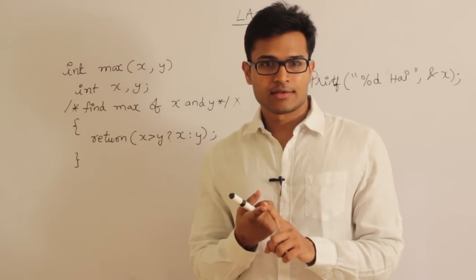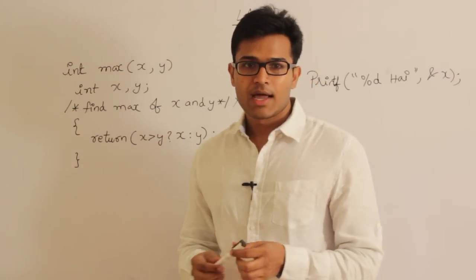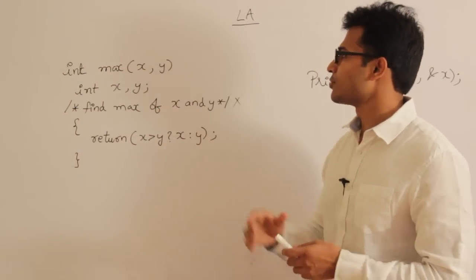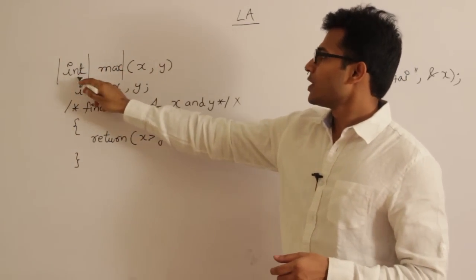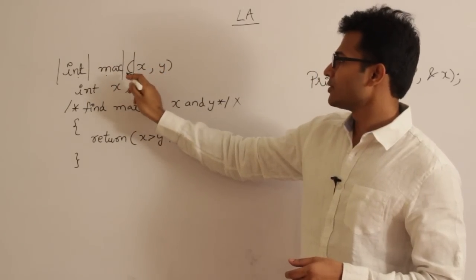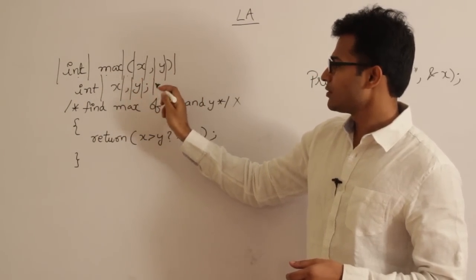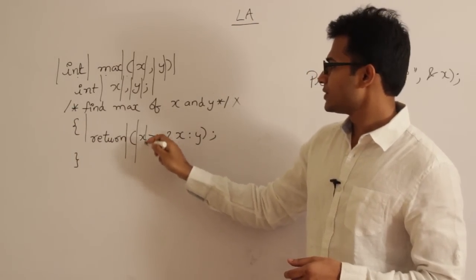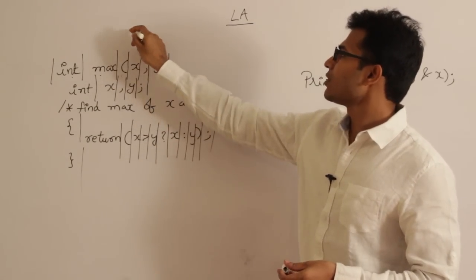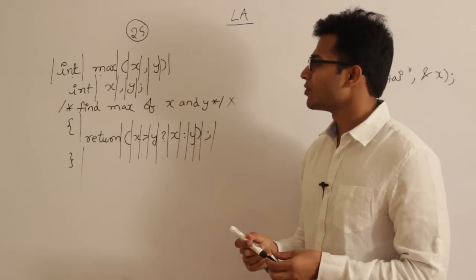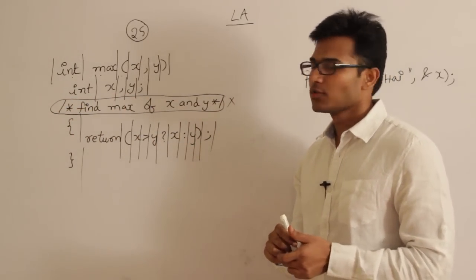So to summarize: the lexical analyzer removes comments, removes white spaces, and reports any errors with their line numbers. Regarding counting tokens — int is a token, max is a token, open brace is a token, and so on. Completely, there are 25 tokens in this particular program. Comments are not counted as tokens; they are completely removed.